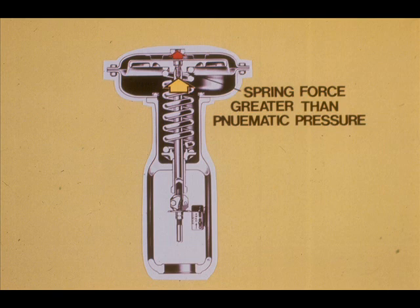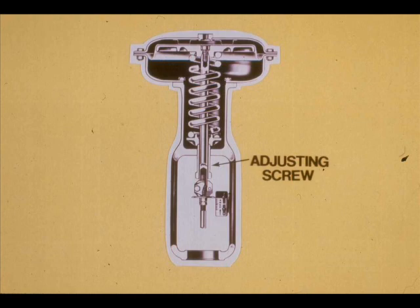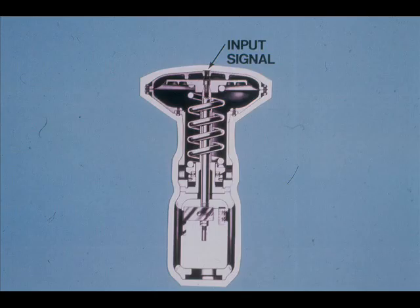If signal air is bled from the actuator, the spring will force the diaphragm upward. The actuator spring is calibrated. If the stroke of the actuator is 2 inches, the spring is designed so that 3 to 15 PSI on the diaphragm results in 0 to 2 inches of actuator movement. The adjusting screw determines the starting point of the actuator. If the actuator spring tension is increased, it will take more air pressure — 4 PSI for instance — to start moving the stem.